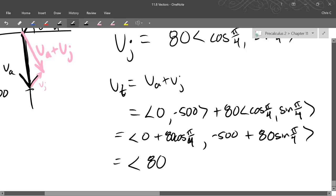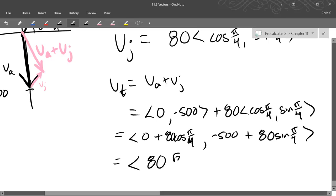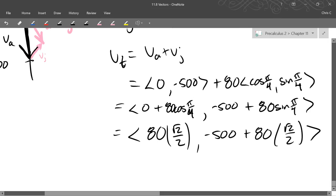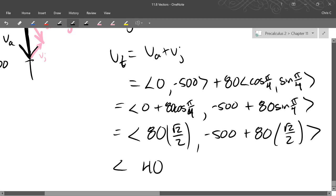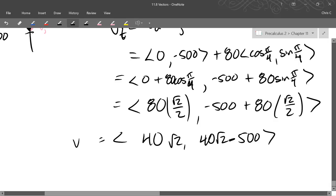So I can evaluate those pretty easily. Cos pi over 4 is 1 over square root 2. And actually, let's use the rationalized version, square root 2 over 2. I normally am very opposed to that, but I see we're about to multiply by 80, and this will make our numbers look a little better. So 80 over 2 is 40 square root 2, comma, put the positive part first, 40 square root 2 minus 500. So that's the total speed right there. So that's the total velocity, not total speed.